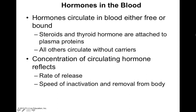Hormones travel through the bloodstream in a couple of different ways — either free or bound. Free hormones are very soluble in blood, meaning they're polar, hydrophilic, and dissolve in blood very well. Other hormones that are nonpolar, such as steroid hormones or thyroid hormone, have to be attached to different plasma proteins, because these plasma proteins increase the solubility of steroid and thyroid hormones in the bloodstream. Steroid and thyroid hormones are nonpolar and hydrophobic, so they must circulate with carrier proteins such as plasma proteins. Amino acid-based hormones, being polar and water-soluble, can circulate freely without a carrier protein.